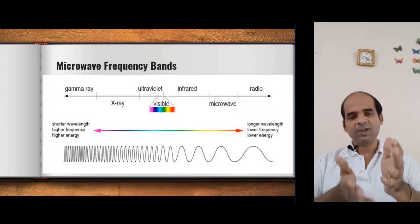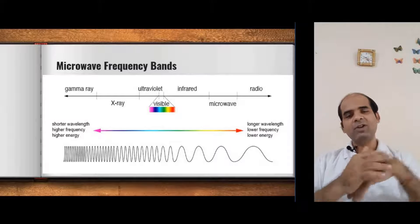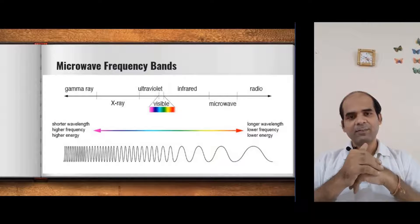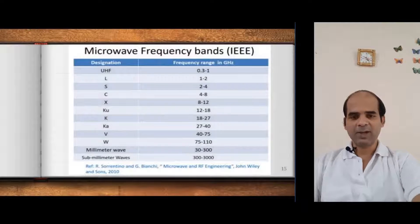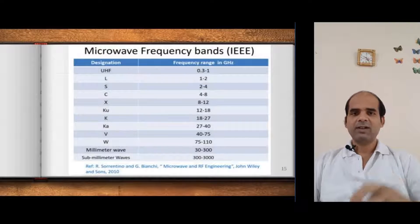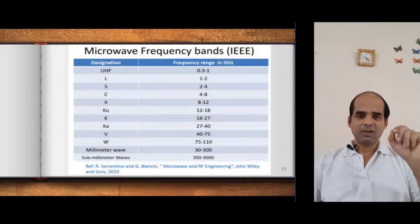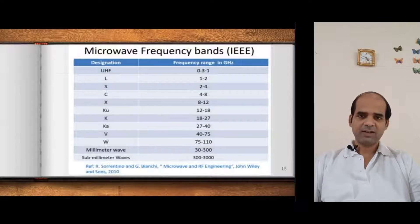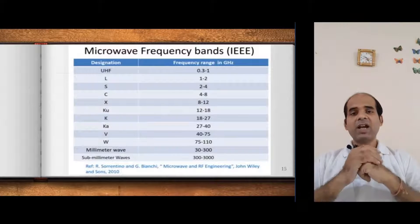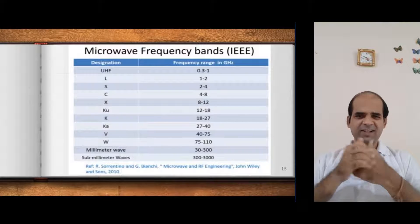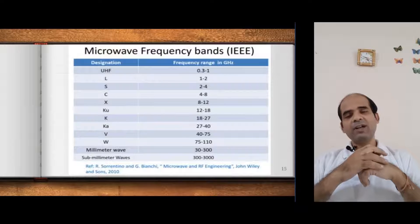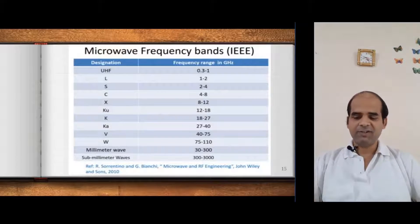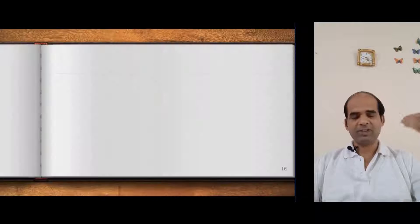This microwave frequency band is again subdivided into many sub-bands. What are those sub-bands and what are their applications? As you are seeing on the screen, the top one is UHF — ultra high frequency band — that is 0.3 GHz to 1 GHz. There are fewer applications here. Major applications start from the next band.